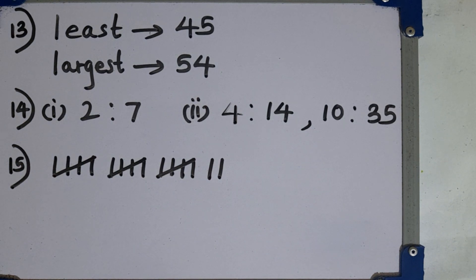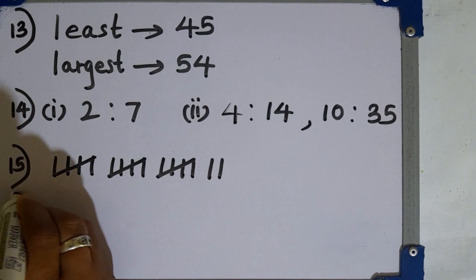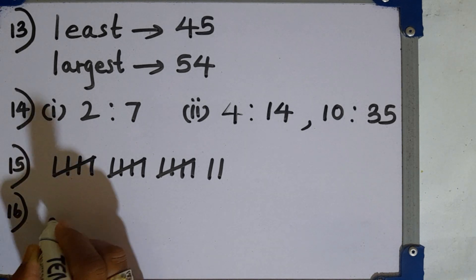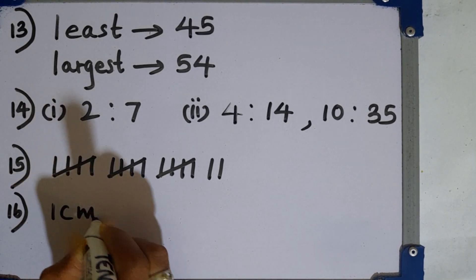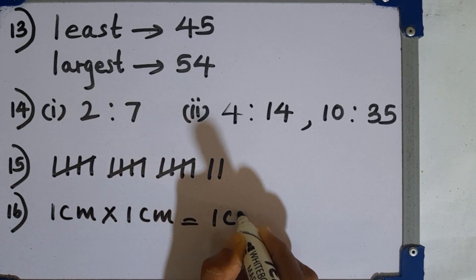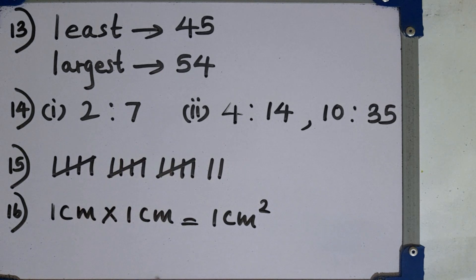Question number 16. Find the area of the square shaped lamina of side length 1 centimeter. If one side is 1 centimeter in the square lamina you can obtain the area by 1 centimeter multiplied by 1 centimeter that is 1 square centimeter.